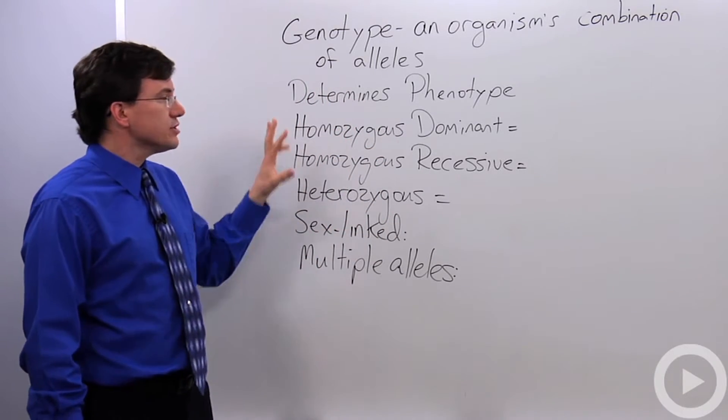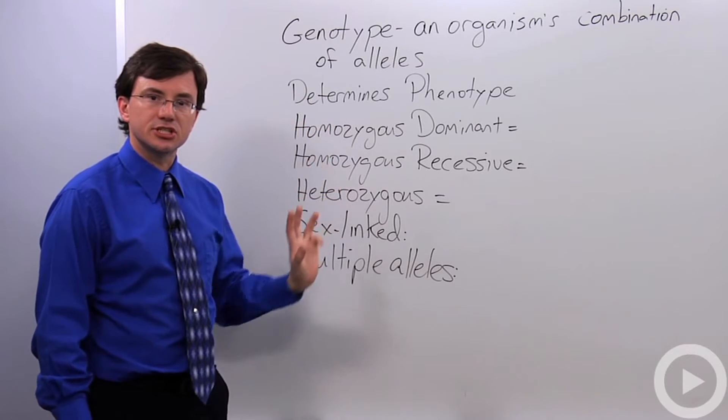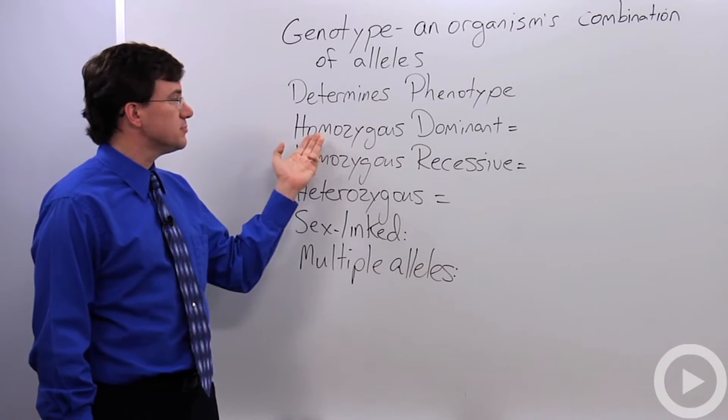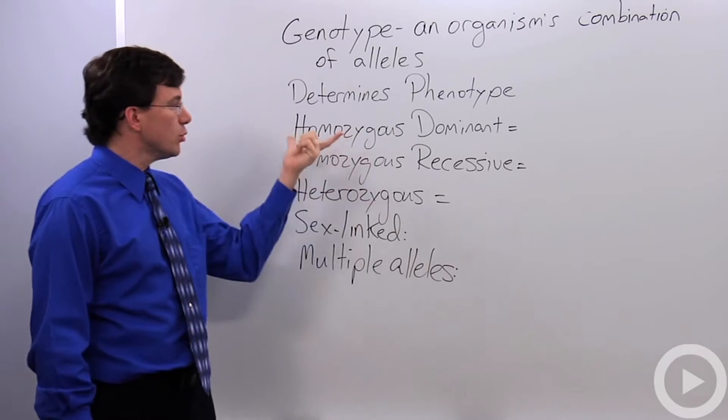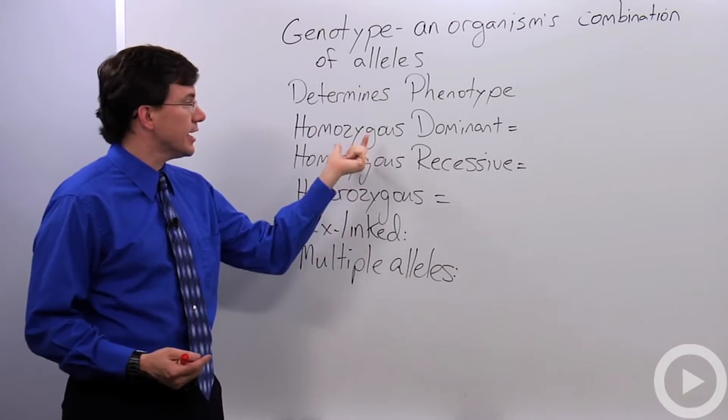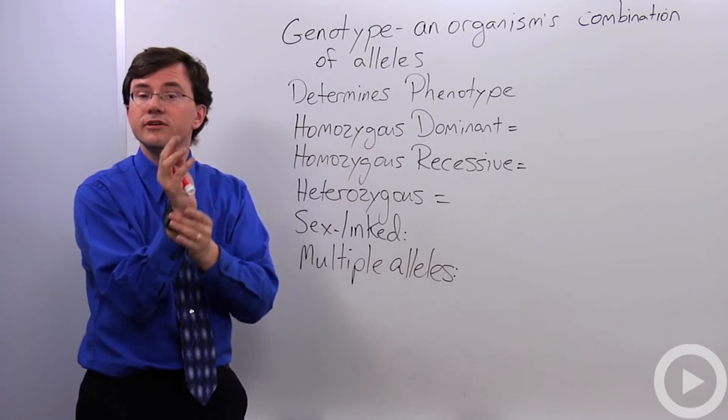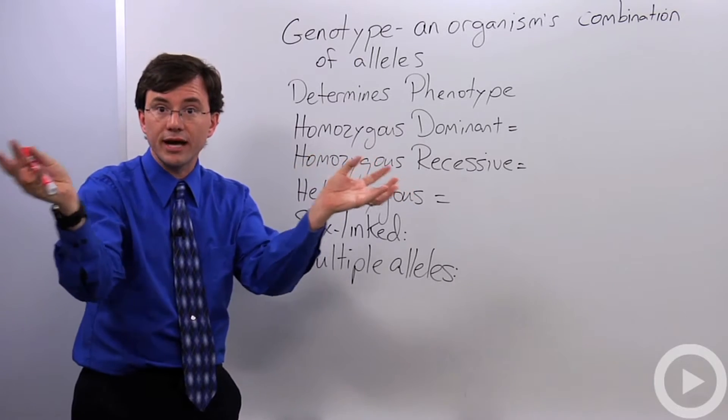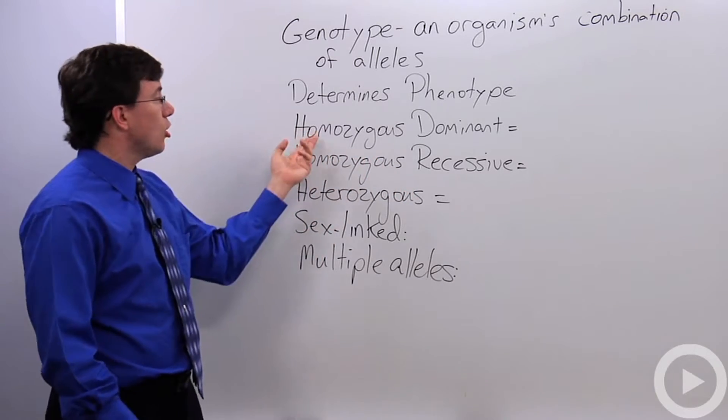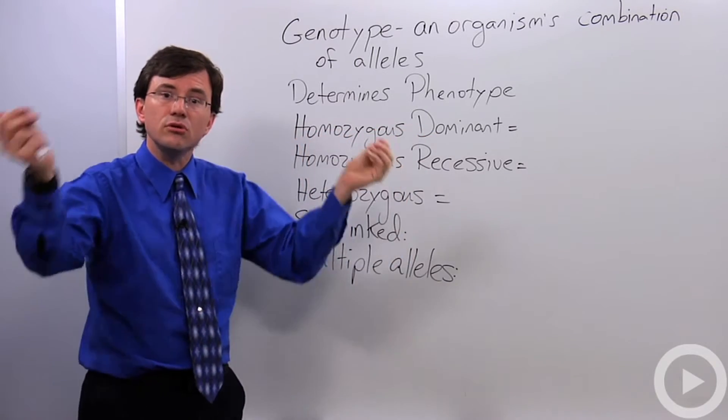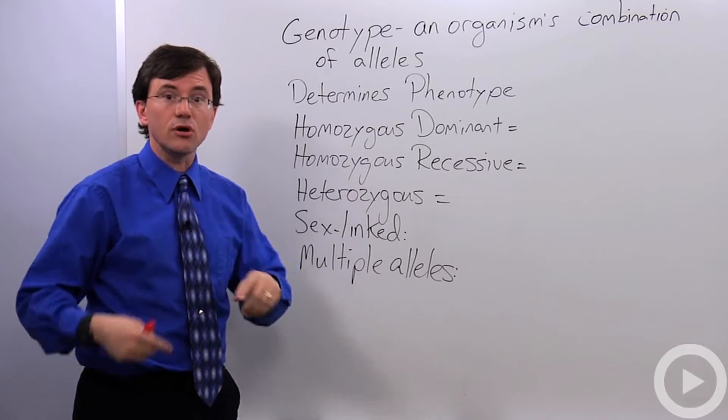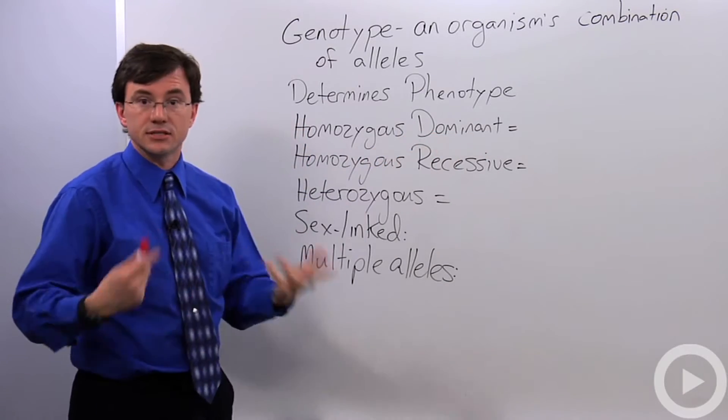There are several different combinations of genes that you can use. You could describe somebody as being homozygous dominant. The root word homo means the same. Zyg refers to the zygote where the two different versions of an allele that you have came together. So homozygous dominant means that the two alleles that came together in you are the same. Dominant means that they're the dominant one.